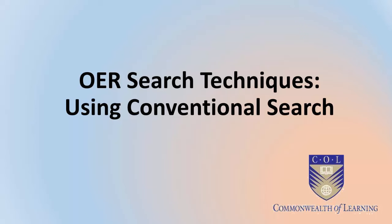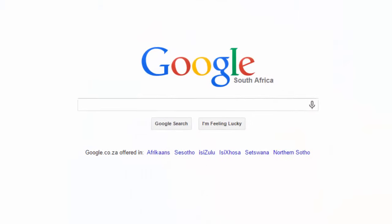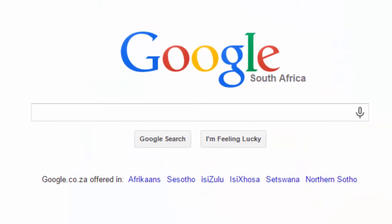Often people are too impatient or have forgotten where the specialized OER and advanced search tools are, so it is possible to use the regular Google search page too. This method is a bit of a hack and the results can be varied, so you need to check the resources before making a selection. Here's a regular Google page — this one picks up that I'm in South Africa, but all national versions of Google operate the same way.